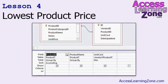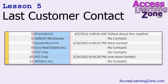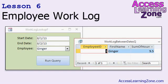In lesson four, we'll use a minimum aggregate query along with some DLookup statements to generate a list of products and the lowest possible price from each vendor, so we can know who the cheapest vendors are for each product. In lesson five, we'll use an aggregate query to generate a list of all customers, when the last contact date was for each customer, and what was discussed. In lesson six, we'll build an employee work log — a simple time clock table with time-in and time-out each day — calculate hours worked, and make a lookup form so you can pick an employee and see the sum of hours worked between two dates.